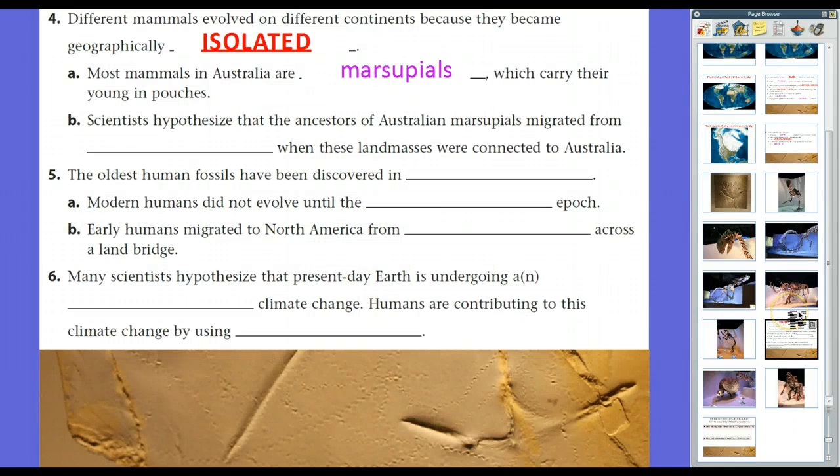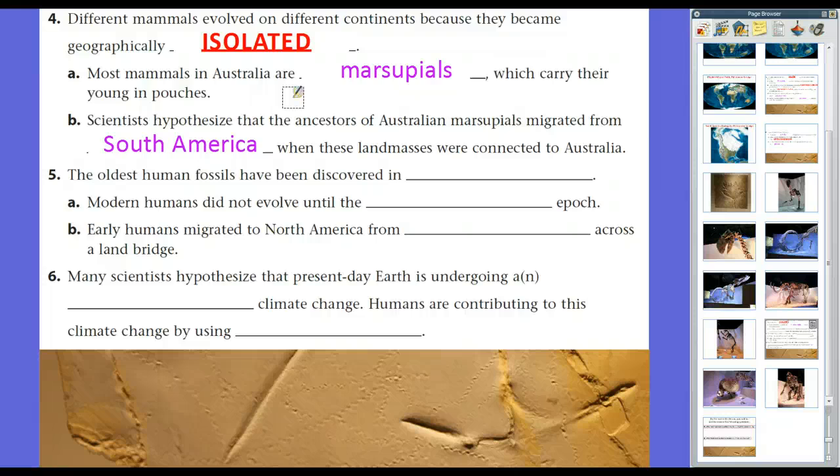But anyway, science has hypothesized that the ancestors of Australian marsupials actually migrated from South America and to a lesser extent, Antarctica, when these landmasses were connected to Australia. And as time went on and as they separated, Australia stayed isolated. So as a result, they evolved in different niches.